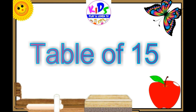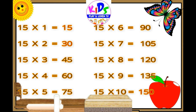Hey kids, let's repeat. 15 ones are 15. 15 twos are 30. 15 threes are 45. 15 fours are 60. 15 fives are 75. 15 sixes are 90. 15 sevens are 105. 15 eights are 120. 15 nines are 135. 15 tens are 150.